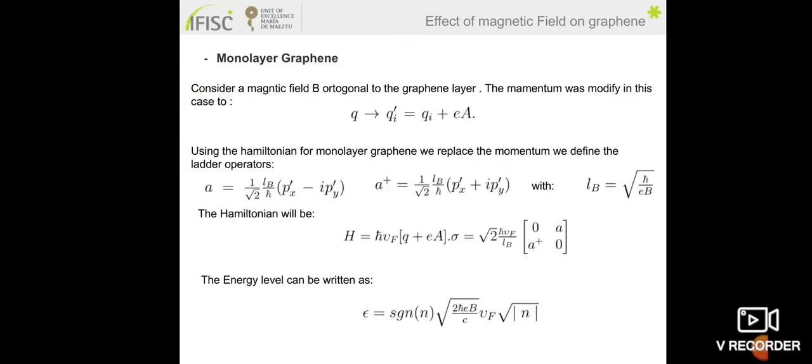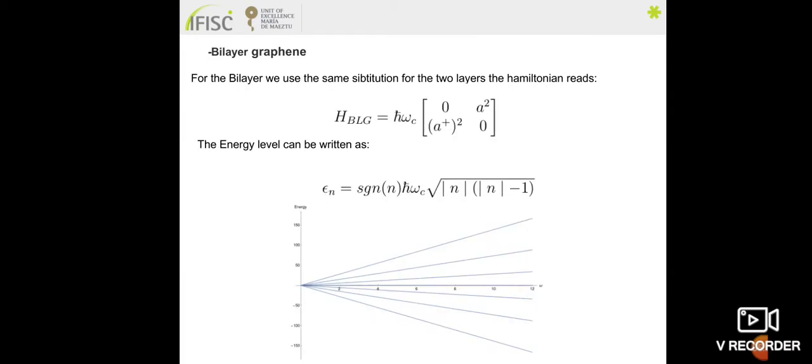Moving to the effect of a magnetic field on graphene: if we apply a magnetic field perpendicular to the graphene layer, the momentum is modified in the Landau gauge representation. After calculation, the energy levels are written as dependent on the magnetic field and the integer n. For bilayer graphene, the same calculation gives energy dependent on magnetic field and integer n. The spectrum is not parabolic — it is linear, representing Landau levels n = 1, 2, 3, up to n.